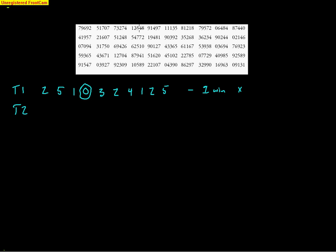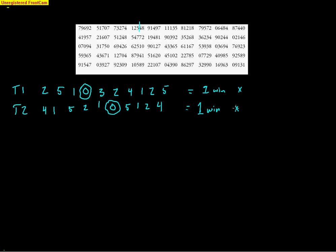One winner is an unsuccessful trial because I need 3 or more. Moving to Trial 2 — going to the next line. 4 works, 1 works, skip 9, 5 works, skip 7, 2 works, 1 works, skip 6, 0 works, skip 7, 5 works, 1 works, 2 works, 4 works — that's 10 numbers. Once again I have 1 win, and I'm looking for 3 or more wins, so that is a fail.